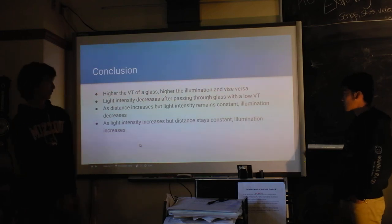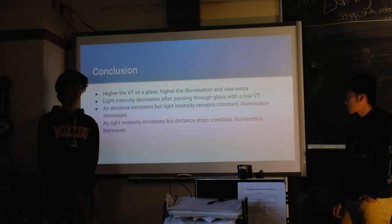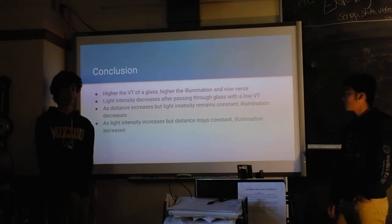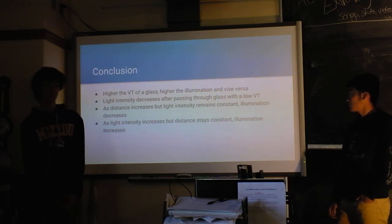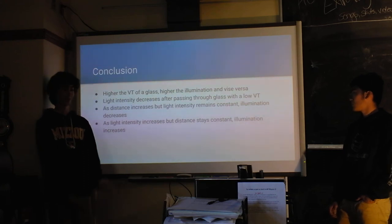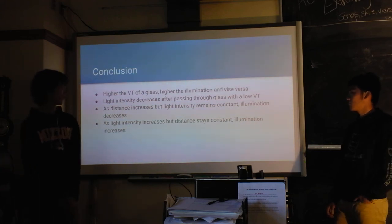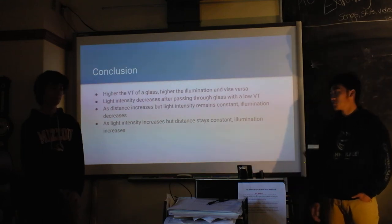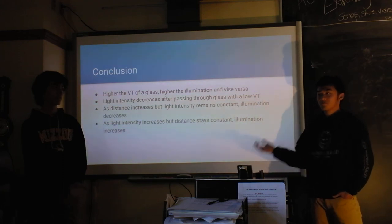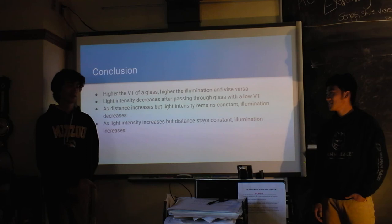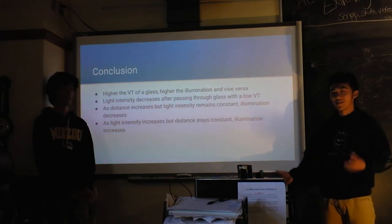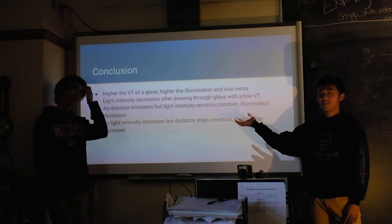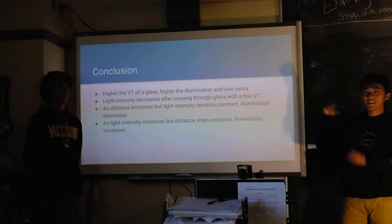From this lab we learned that the higher the visible transmittance, the higher the illumination on the other side of the glass. We saw that light intensity decreased after passing through a low visible transmittance filter. As distance increases, illumination decreases. Basically we did a whole bunch of experiments to prove that first equation — we figured out the equation by knowing all the variables and graphing the data, then deriving the equation from that graph.